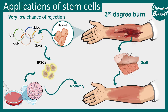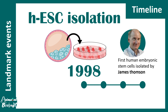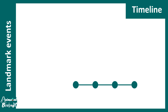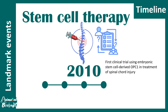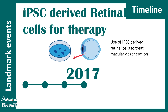Let's end with a bit of history and a few open questions. In 1998, human embryonic stem cells were isolated for the first time by James Thomson. A few years later, groundbreaking work from Shinya Yamanaka and K. Takashi showed that using a proper molecular cocktail, any cell can be converted into a stem cell. In 2010, the first clinical trial using embryonic stem cell-derived OPC1 treatment was given to spinal cord injury patients. In 2017, iPSCs were used for the first time to treat macular degeneration.